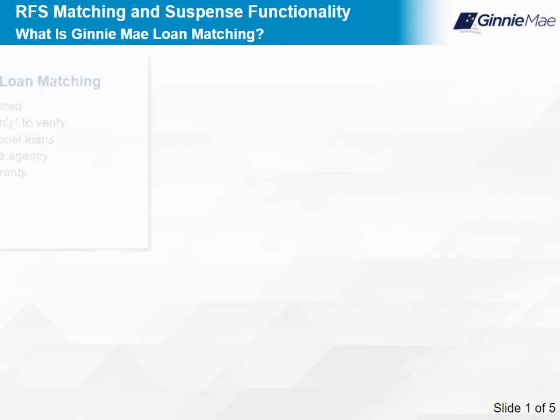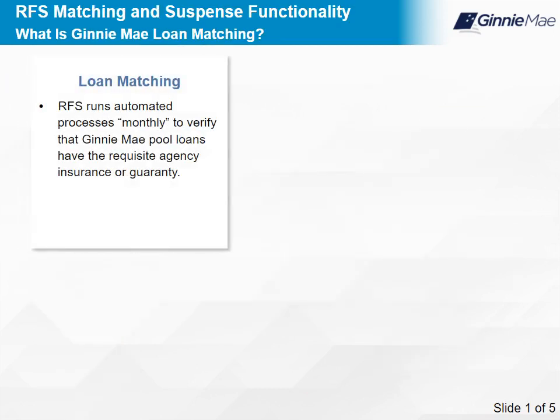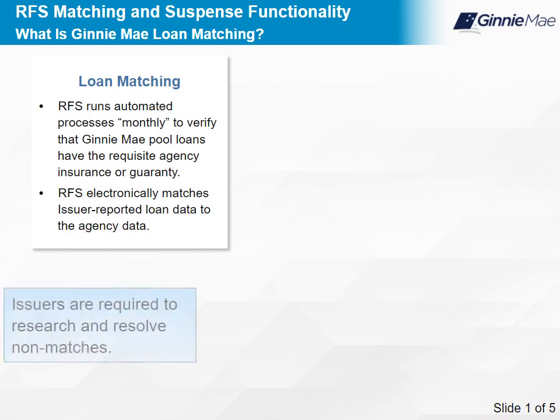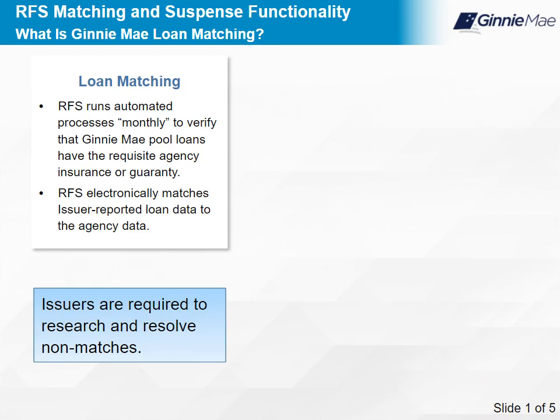The Reporting and Feedback System, RFS, runs automated processes monthly to verify that Ginnie Mae pool loans have the requisite agency insurance or guarantee. RFS electronically matches issuer-reported loan data to the agency data. Should there be non-matches, issuers are required to research and resolve all non-matches.